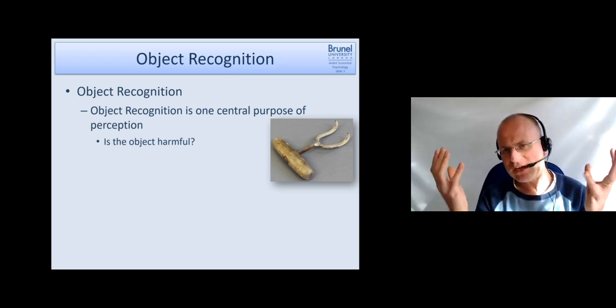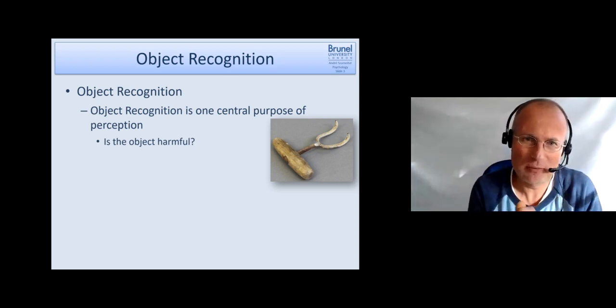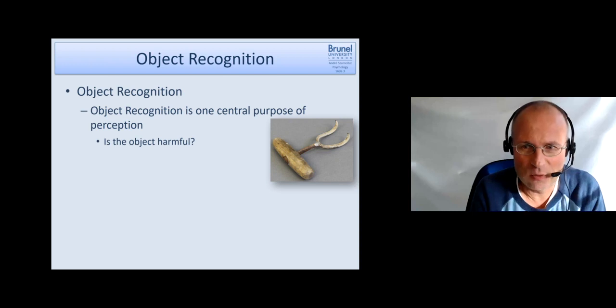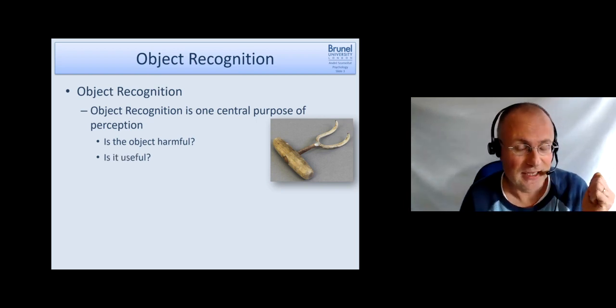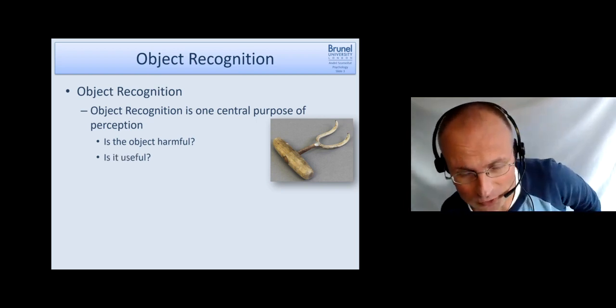It's a very central purpose of our perception because we need to be able to decide are the objects harmful. Objects could also be animals for instance and whether it might be useful to use as a tool.